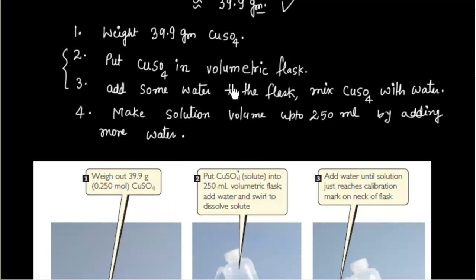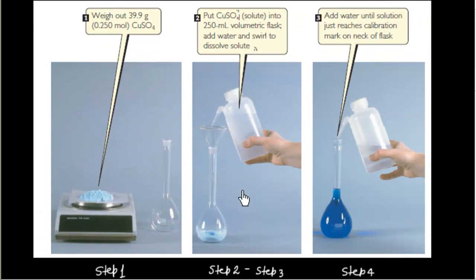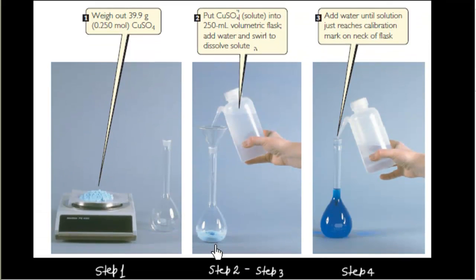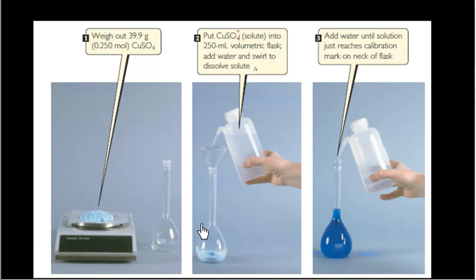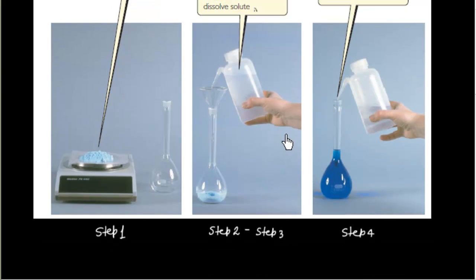That is step 2 and step 3, that is put CuSO4 into the volumetric flask. So we have added CuSO4 into the volumetric flask and then add some water. So we have added some water, mix them carefully. And finally we have to add water so that the final volume is 250ml. So this time this reading is basically 250ml. So final reading that is graduated scale.